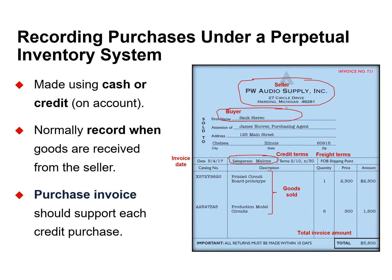Companies may purchase inventory for cash or credit. They normally record purchases when they receive the goods from the seller. Every purchase should be supported by business documents that provide evidence of the transaction. A purchase invoice indicates the total purchase price as well as other relevant information such as credit and freight terms.